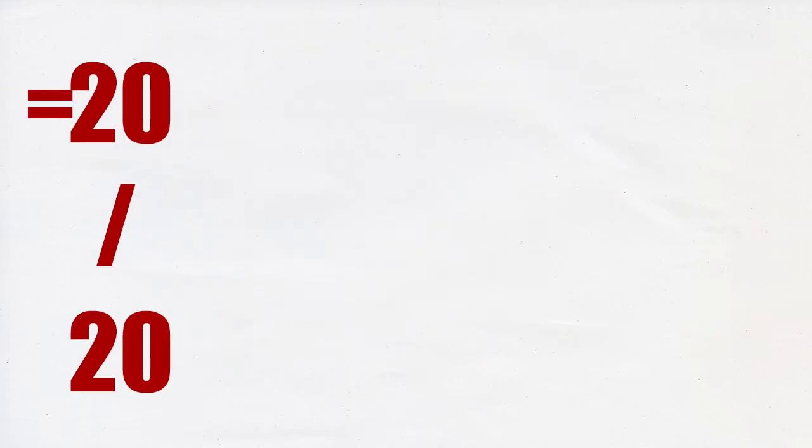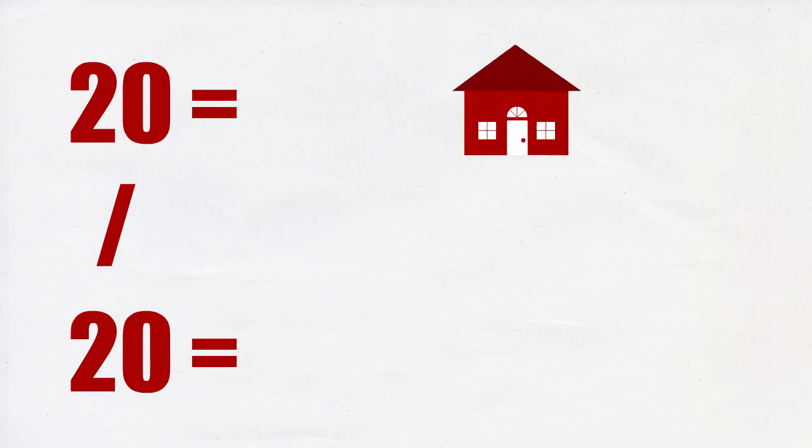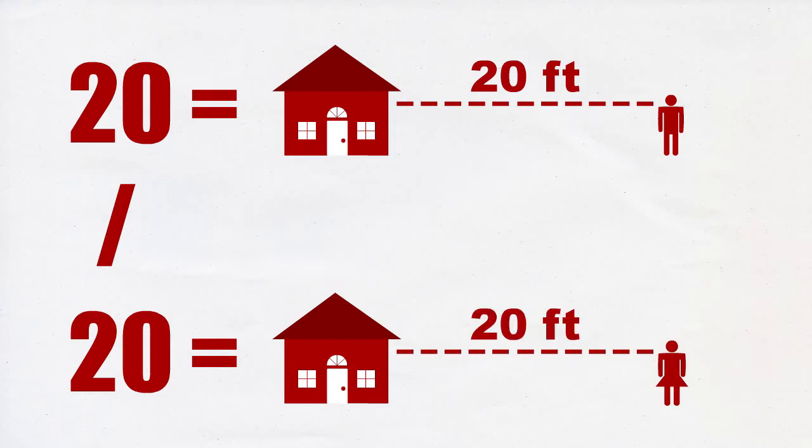20/20 vision - we all know it means perfect eyesight, but what exactly do the actual numbers mean? 20/20 means that you can see something 20 feet away from you that a normal person can also see 20 feet away from themselves.